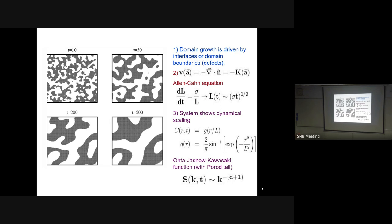Using the Ohta-Jasnow-Kawasaki (OJK) auxiliary field approach - which I explained briefly but you can find more in my notes - you actually find that the correlation function has this dynamical scaling form. The length scale L just becomes a ruler for the distance between two points. This is called the OJK function, and a very nice feature known to experimenters is that it has what's called a Porod tail.